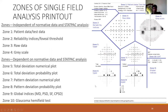A full single field printout is divided into 10 zones. The first four zones — patient data, stimulus data, strategy, point pattern, pupil diameter, refraction — are independent of normative data and statpack analysis. The remaining six zones — total deviation numerical and probability plots, pattern deviation numerical and probability plots, global indices, and the glaucoma hemifield test — undergo statpack analysis and are compared to a normative database. There are ten steps in a single-field analysis. The most important first step is to verify that patient data is entered correctly, as incorrect data leads to a wrong normative database being used.